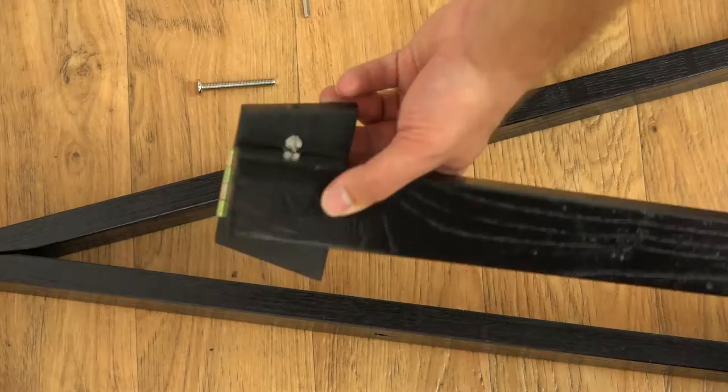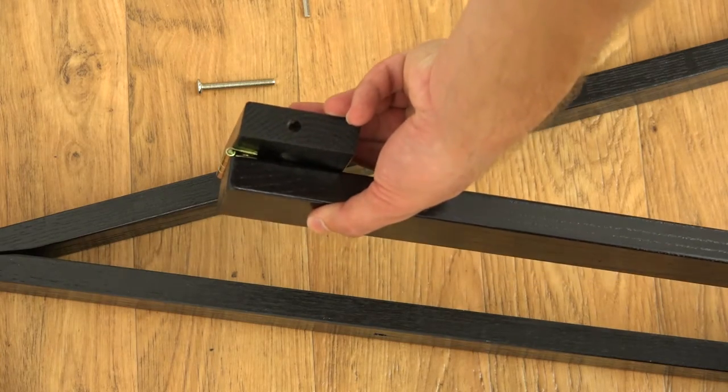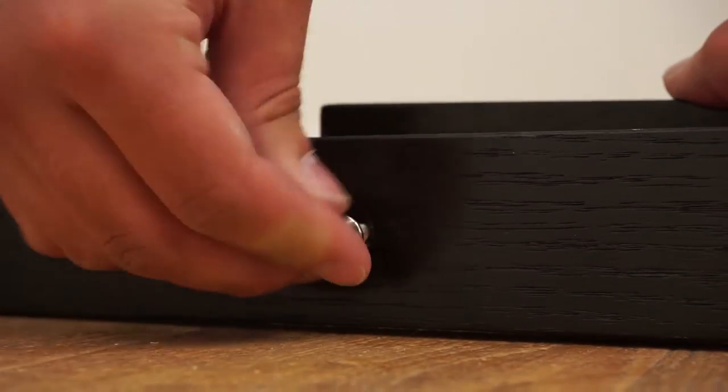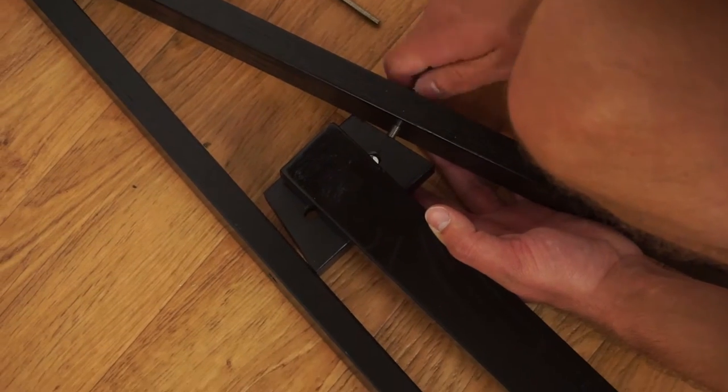You can also repeat these steps with the top crossbar. Insert the bolt through the easel leg and into the dowel nut to screw it into place and tighten with an allen wrench.